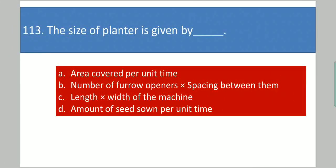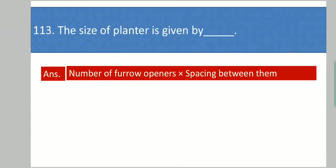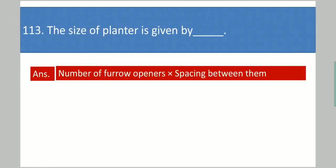Next question: The size of a planter is given by dash. Your options are: area covered per unit time; number of furrow openers times spacing between them; length times width of the machine; amount of seed sown per unit time. Your answer is number of furrow openers times spacing between them.